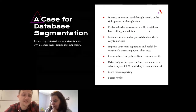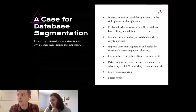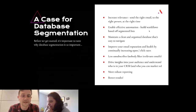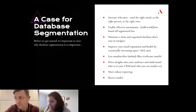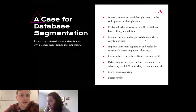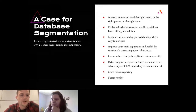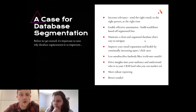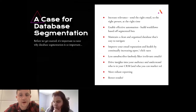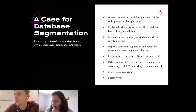The second one: enabling effective automation, so you can build workflows in HubSpot off the back of segmented lists and obviously have that as part of your automation strategy. You can maintain a clear and organized database that's easy to navigate. If you do this and keep it updated, you're going to have clean, segmented lists that are really easy for anyone — new employees or external people — to navigate and find the lists they want.